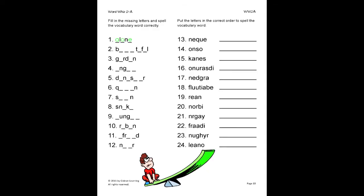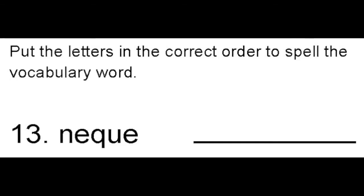On this next part of the activity, the student will put the letters in the correct order to spell the vocabulary word. We are given the scrambled letters N, E, Q, U, and E. We can refer back to the definitions page to see that these letters are in the word queen. So we will neatly write queen on the provided line.